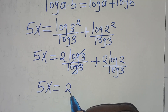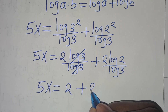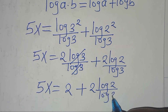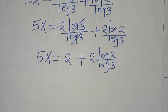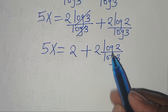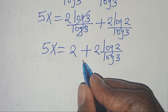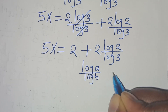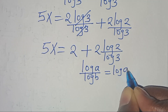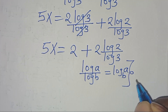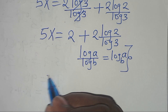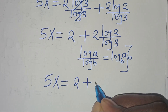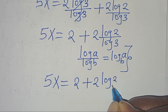So 5x equals 2 plus 2·log(2) divided by log(3). Now log(2)/log(3) is in the form log(A)/log(B), which can be expressed as log base 3 of 2. Applying this property, we have 5x equals 2 plus 2·log₃(2).